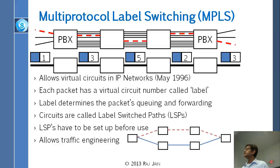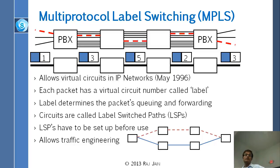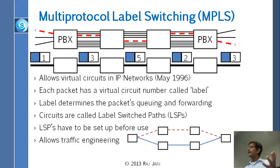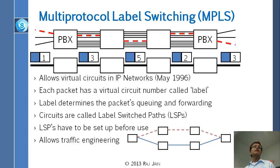These are virtual circuit numbers. IP people said we can do the same thing. In ATM, the data part was 48 bytes, the header part was 5 bytes — total 53 bytes, everything fixed size. IP people said fixed size or small size doesn't help anything. All the magic is in this number and we can put the number in front of our packet. These numbers are called labels and we can do label switching.